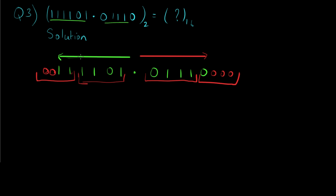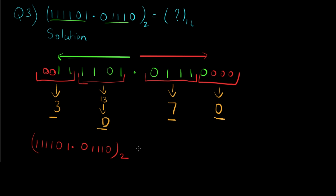Now we convert these pairs to individual hexadecimal values. 1101 corresponds to 13, which in hexadecimal is D. 0011 corresponds to 3 in hexadecimal. 0111 corresponds to 7 in hexadecimal, and 0000 equals 0 in hexadecimal. Clubbing all values together, the final answer is 3D.70 in hexadecimal. Don't forget to add the decimal point in between.